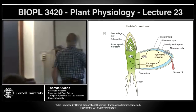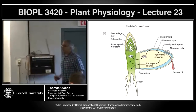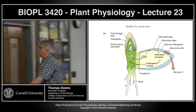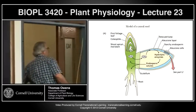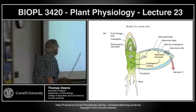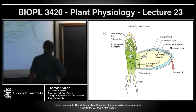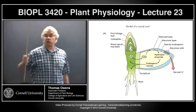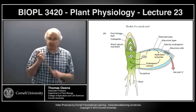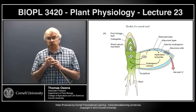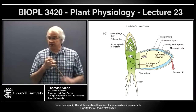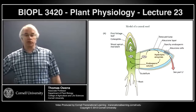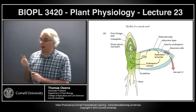The role gibberellins play in germination of cereal grains, and in particular, the important part is providing substrates and carbon skeletons for the growing embryo from the endosperm. The endosperm is typically storage of both carbohydrates in the form of starch and proteins. These storage materials need to be broken down so they can be used by the growing embryo.